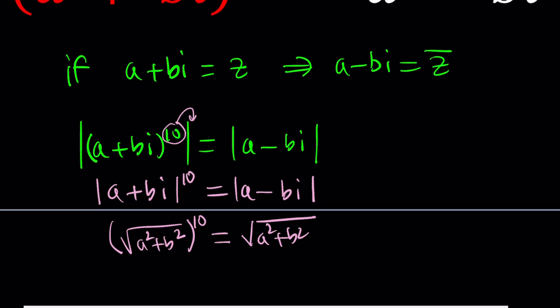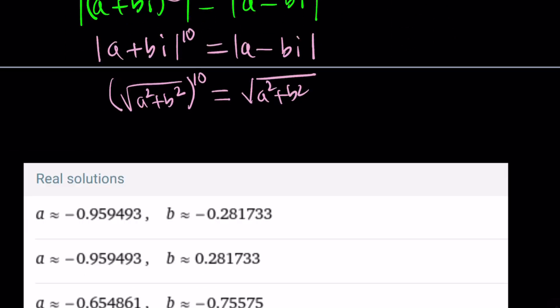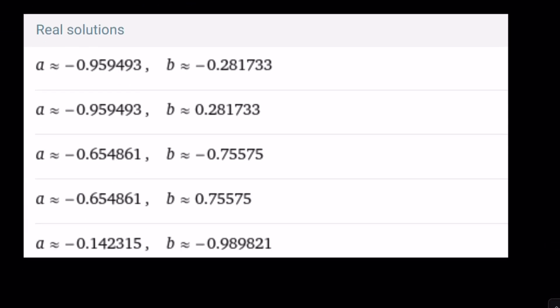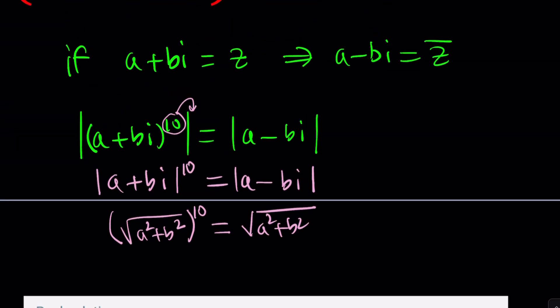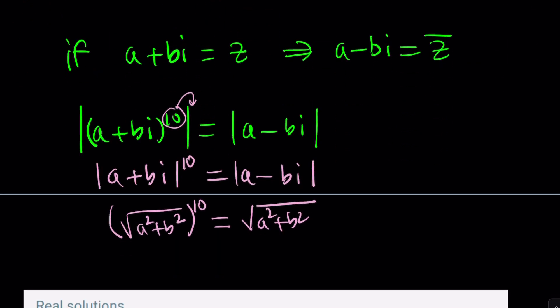Before we continue with this, I want to show you some solutions that I got from alpha. I got these solutions for a and b. And I'll also show you by using the binomial theorem. I thought I included it, but looks like I didn't. But anyways, if you expand a plus bi to the tenth power, you're going to get something gigantic.